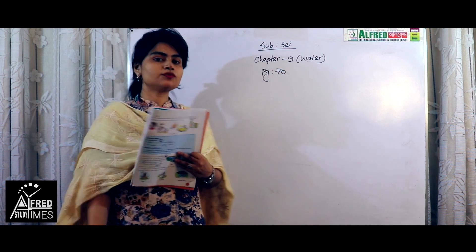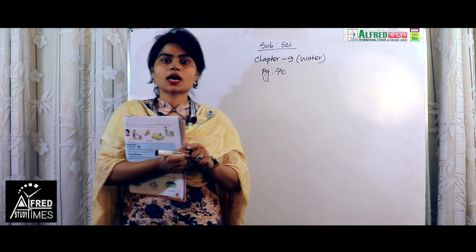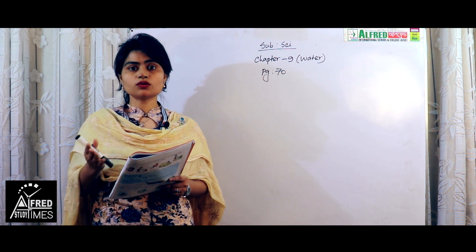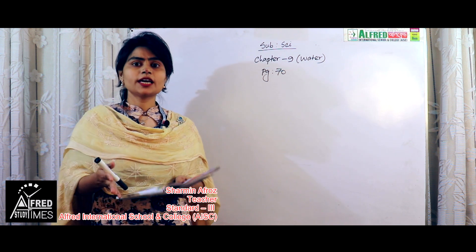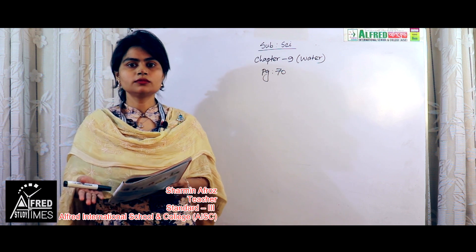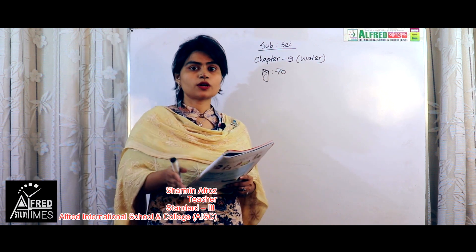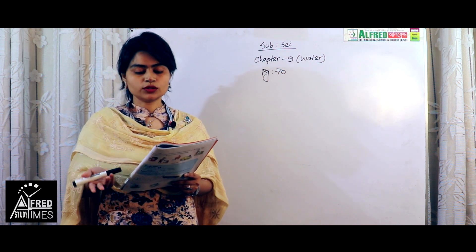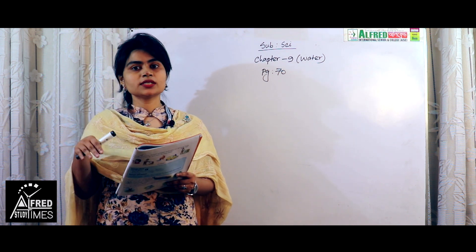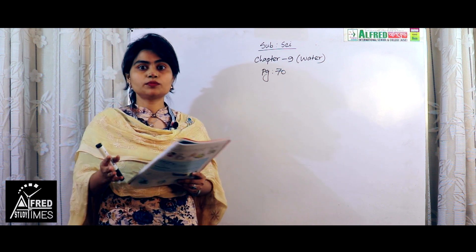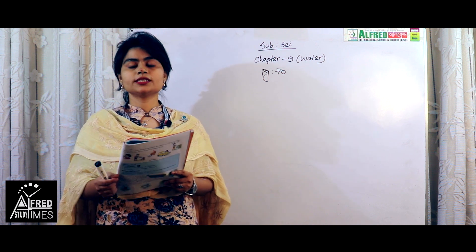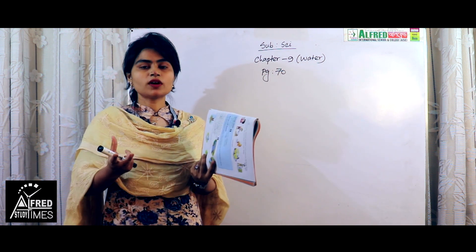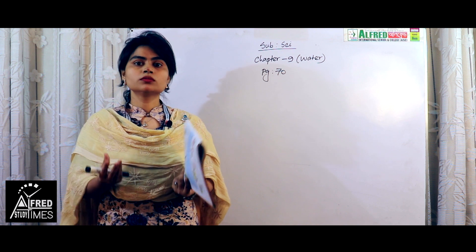We will start our lesson from page 70 and it is about water. First we have to know about the source of water. Rain is the main source of water naturally, because from rain we can easily get water. Rain comes from clouds and when it comes to the earth, it takes the shape of puddles or streams. We all know that a puddle is a small place where rainwater is stuck for a few moments.